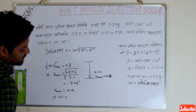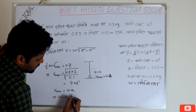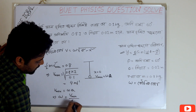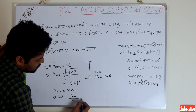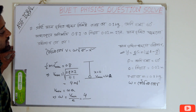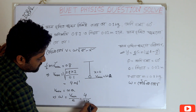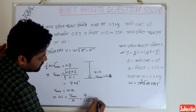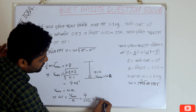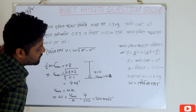We know that v maximum is equal to omega into A. So we know that v maximum divided by A gives us omega. V maximum equals 4, and A equals 0.02, so the rate is equal to 200. Therefore, omega equals 200 radians per second.